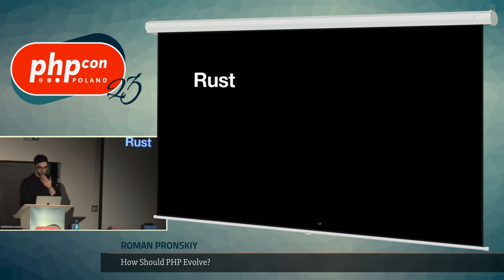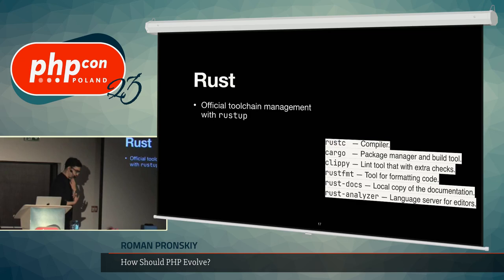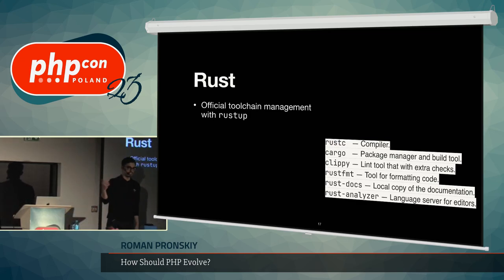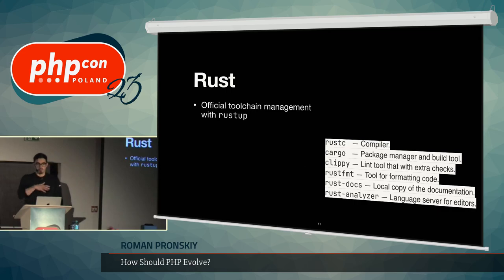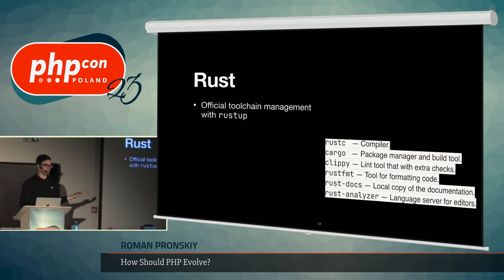Let's take Rust. What Rust has is an official toolchain — the Rustup tool you can download for any platform. It has everything: you can install any version of Rust on your machine, even beta versions. They have Cargo, which is like a Composer built in. Why doesn't PHP have something like that? It would be nice to have it all in one, out of the box.